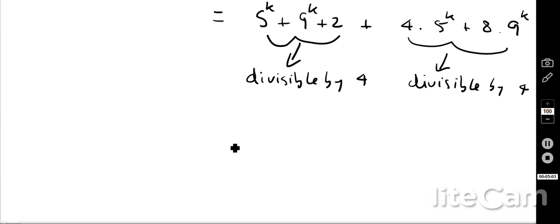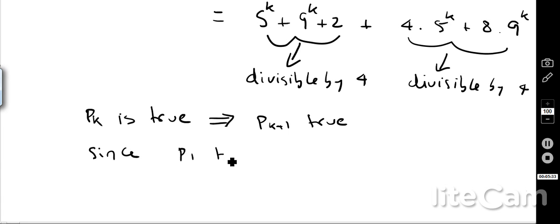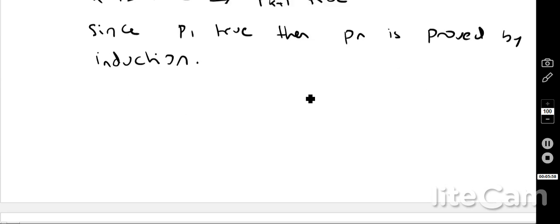Therefore I've proved by induction that it's correct. To finish, if P(k) is true and that implies P(k+1) is true, then since P(1) is true, P(n) is proved by induction. In an exam you would need to include that last couple of sentences to get your final mark. So we've proved by induction that that is correct. Now let's look at one more example.